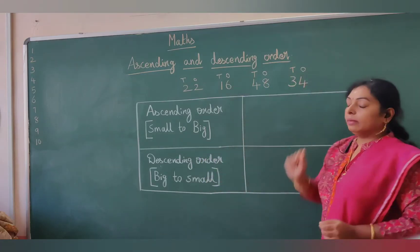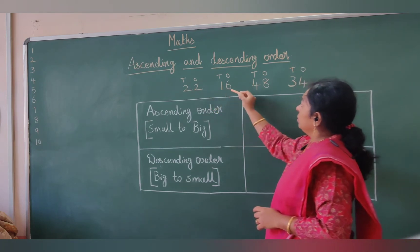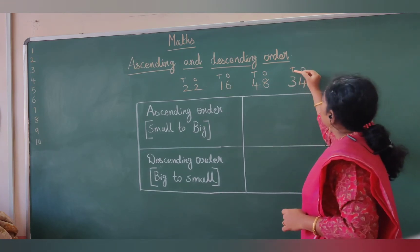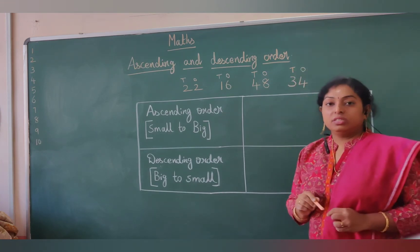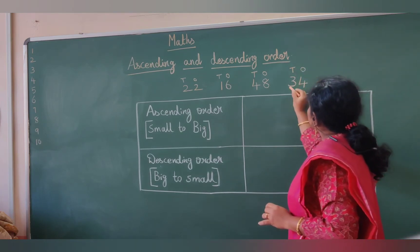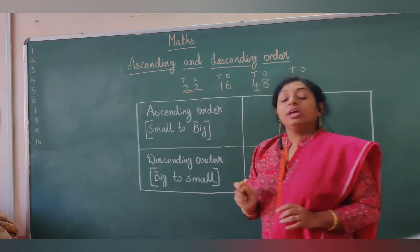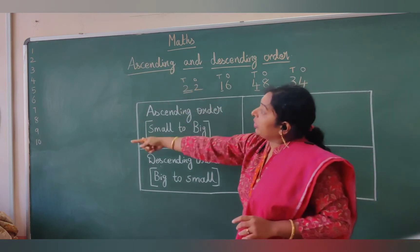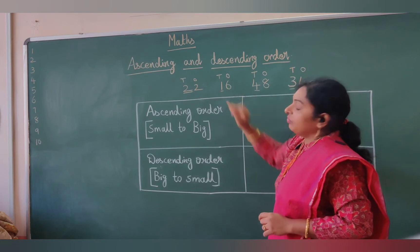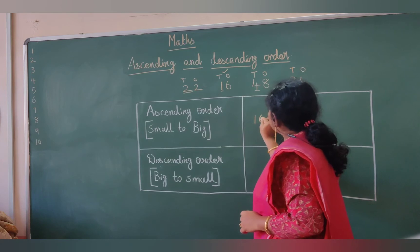Let us arrange these numbers in ascending as well as descending order. The numbers are 22, 16, 48, and 34. What we have to do is look at the tens digit of each number. Here we have 3, 4, 1, and 2. Which is the smallest tens digit? We have 1, so 16 is the smallest number. Let me write 16 first.